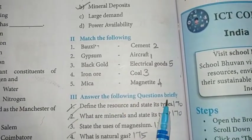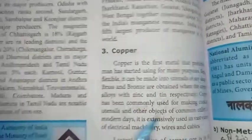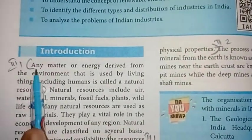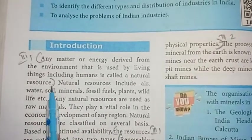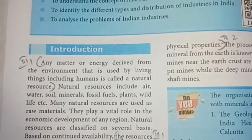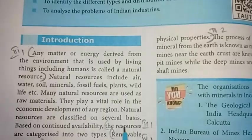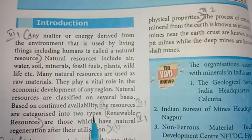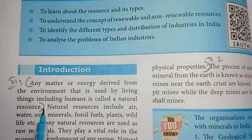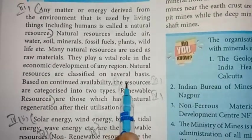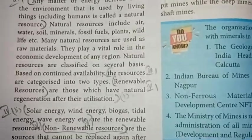Roman number 3 - answer the following questions briefly. First one: define the resource and state its types. Any matter or energy derived from the environment that is used by living things including humans is called a natural resource. The resources are categorized into two types: renewable resources and non-renewable resources.